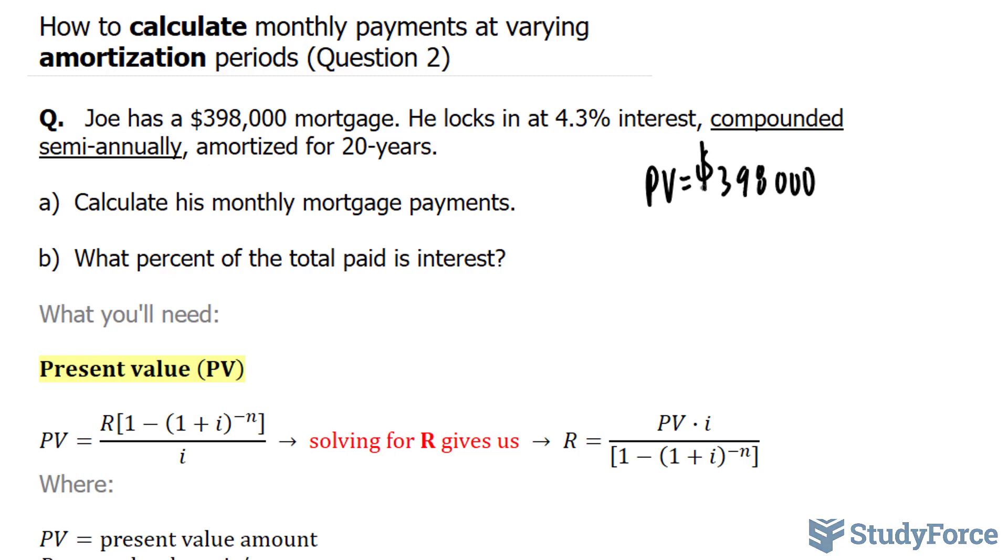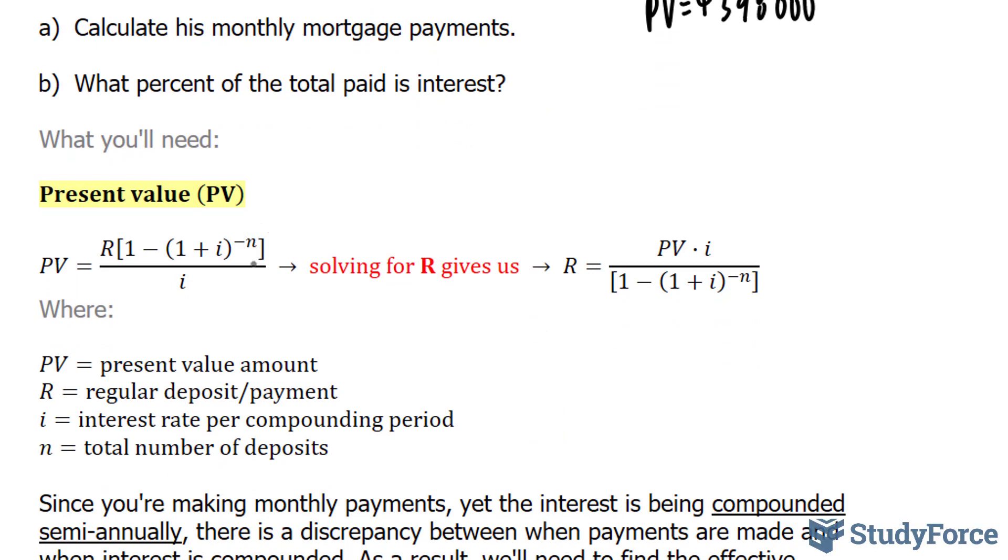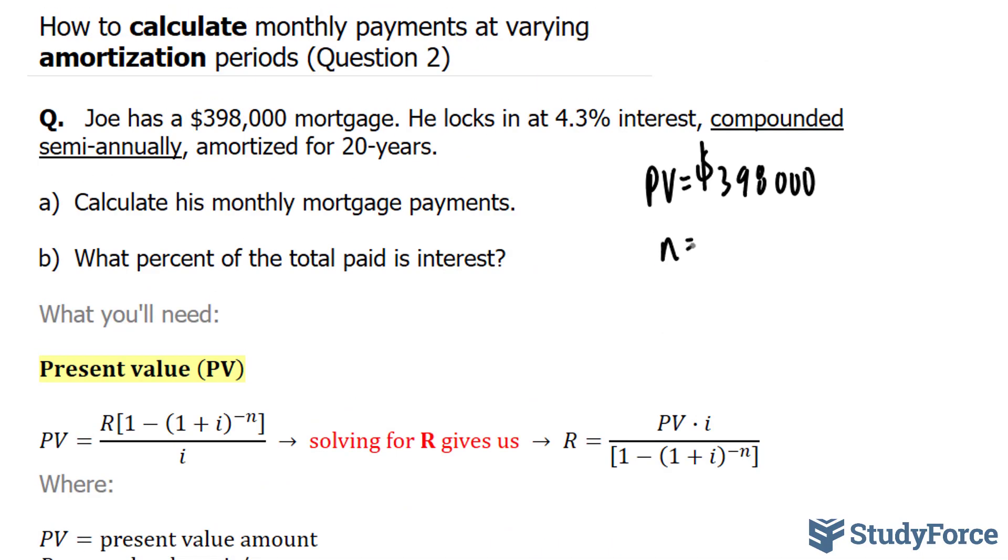We're also told that he will be making monthly payments for the next 20 years. The letter N in our formula represents the total number of deposits. So therefore, N is equal to 20 times 12. 20 comes from the 20 years, and 12 comes from the amount of months in the year. So 20 times 12 is equal to 240. We also need to find what i is equal to.